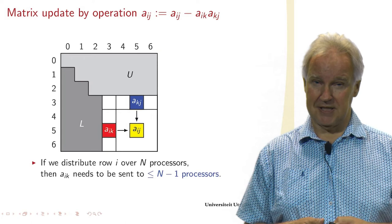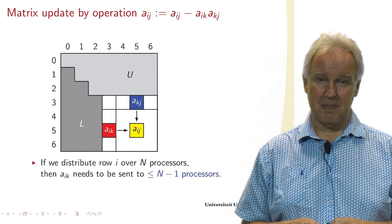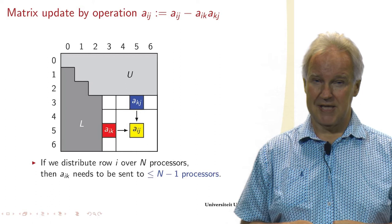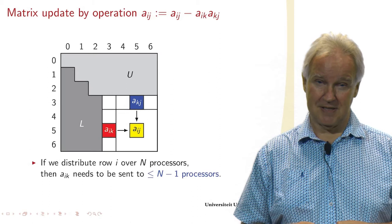Here you see this in a matrix. We have computed L and U. AIK may be on the red processor, AKJ on the blue processor, and AIJ is the processor that needs these two elements, and that's on the yellow processor.